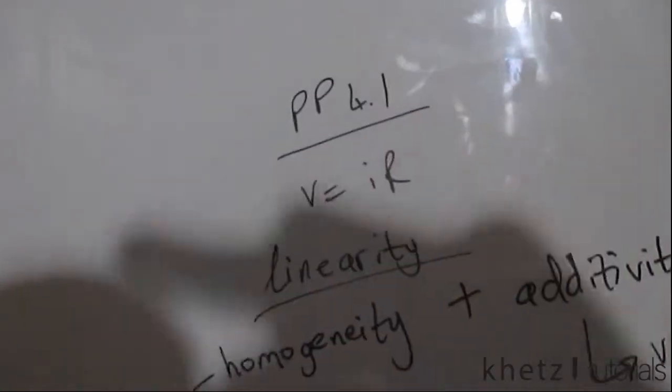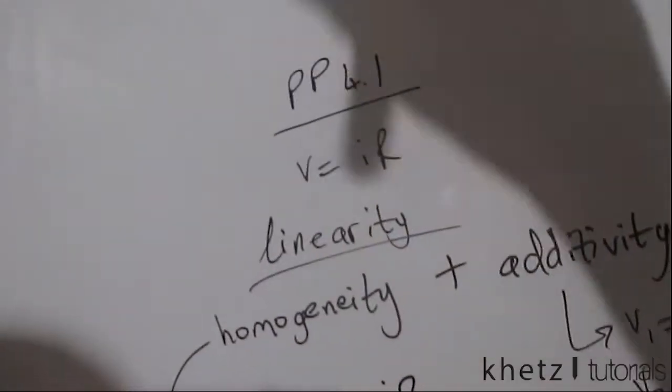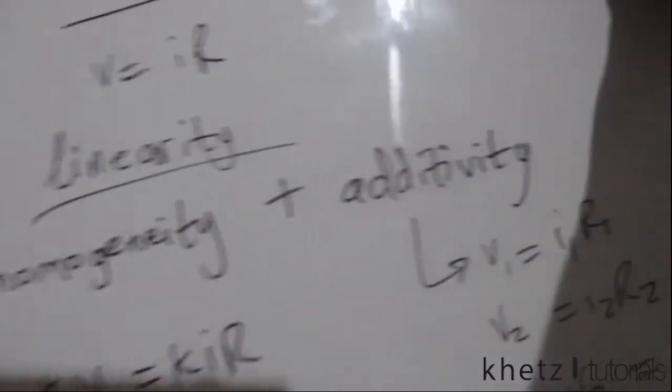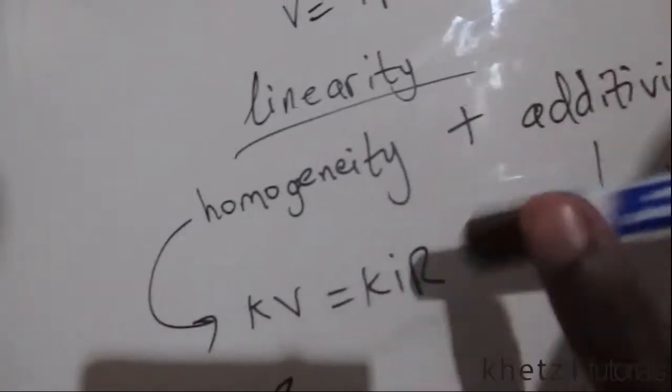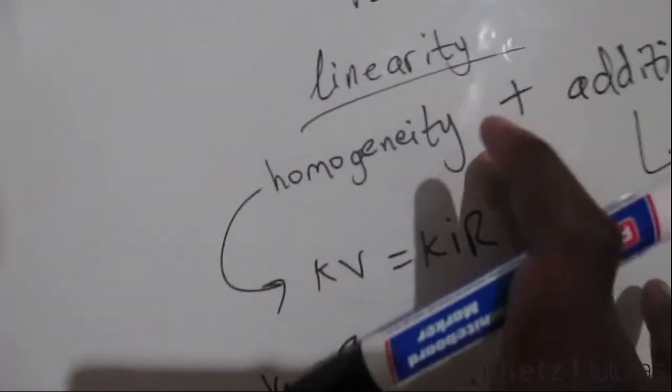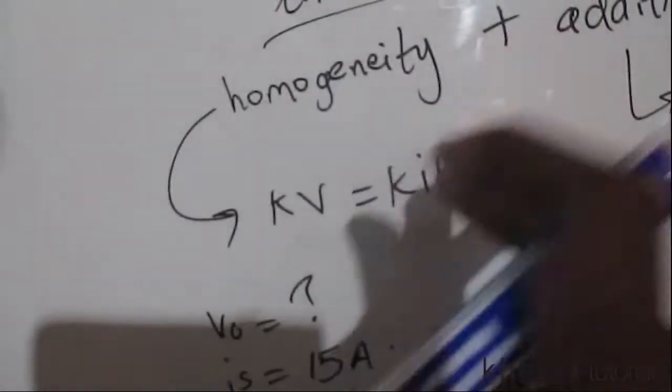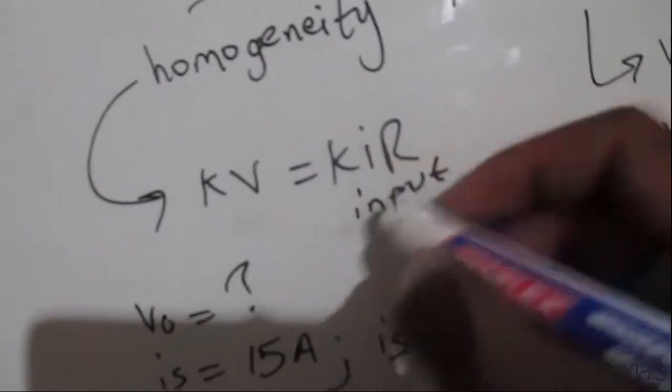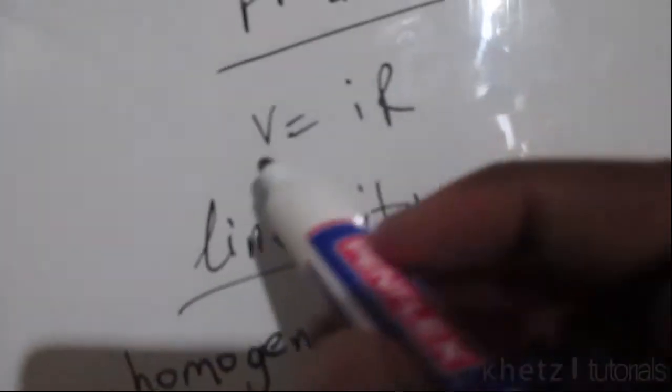So this section talks about the linearity property and this is made up of two parts which are homogeneity and additivity. For this homogeneity part, from Ohm's law we have V equals IR.